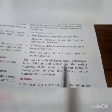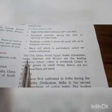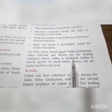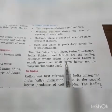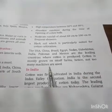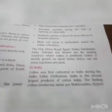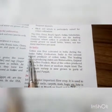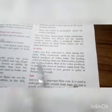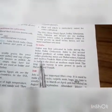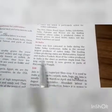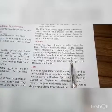Leading cotton-producing countries: the USA, China, Brazil, Egypt, Sudan, Uzbekistan, India, Pakistan and Mexico. Cotton is mostly grown on small farms, hence not too many machines are used. In India, cotton was cultivated since the Indus Valley civilization. The leading cotton-producing states are Maharashtra, Gujarat and Andhra Pradesh. Most cotton produced in India is the short or medium staple kind.